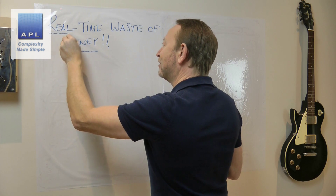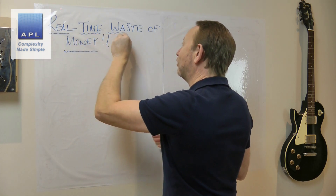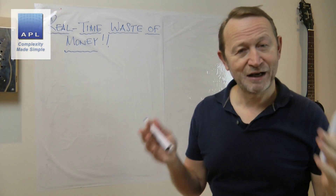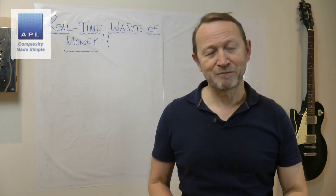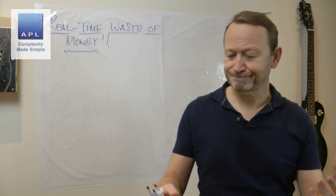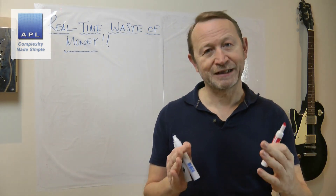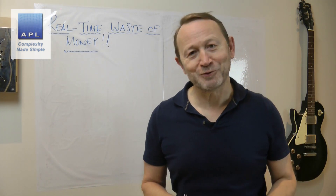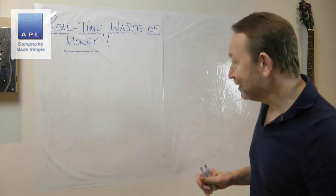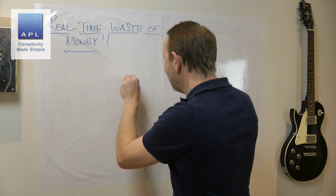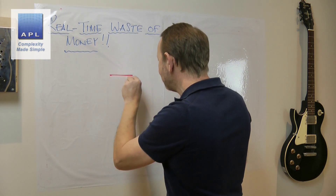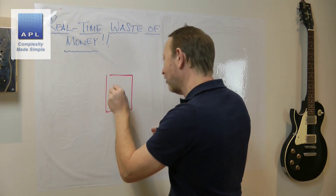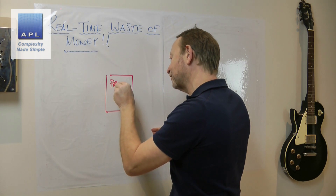These systems cost a lot of money and take a hell of a lot of time to implement. What you really needed was a piece of paper and a pencil. So let's go to the heart of process thinking. First of all, let's start with this: you have a process.